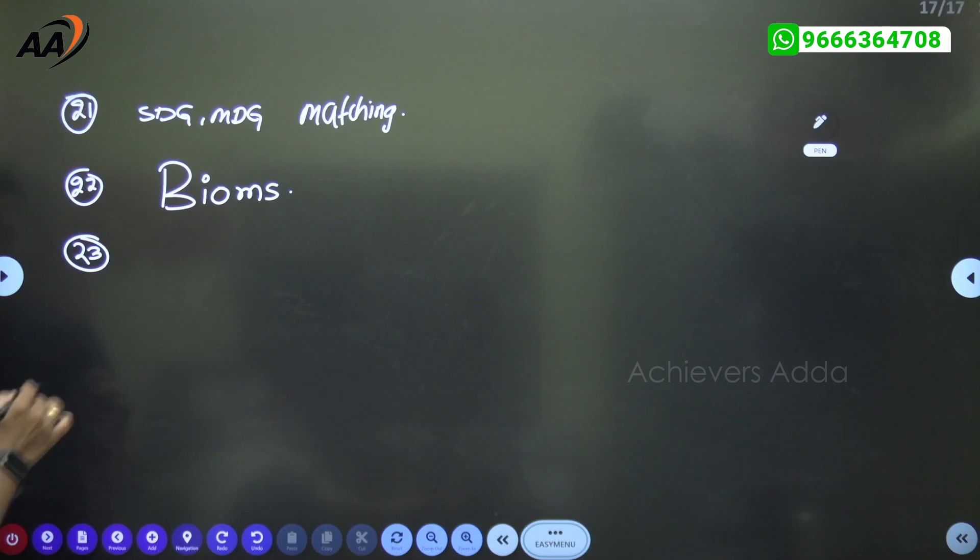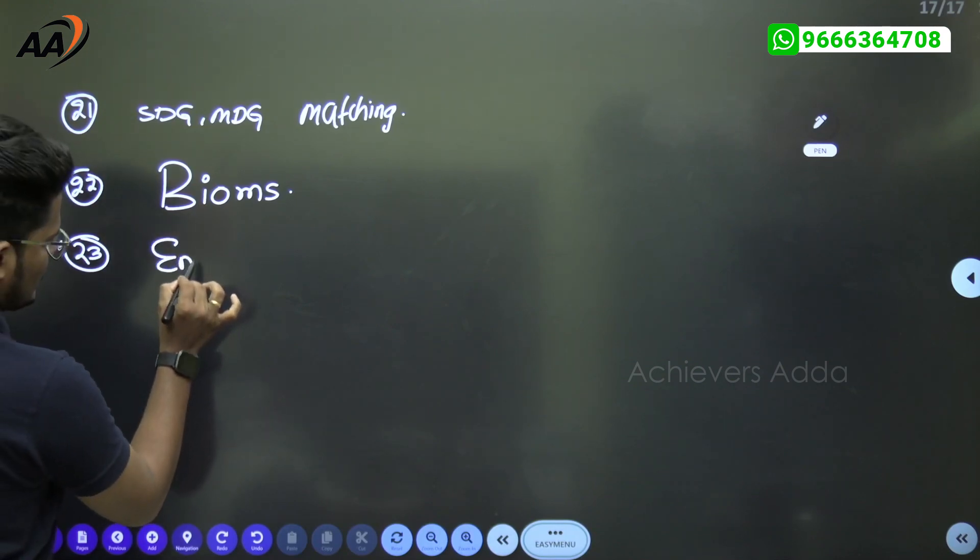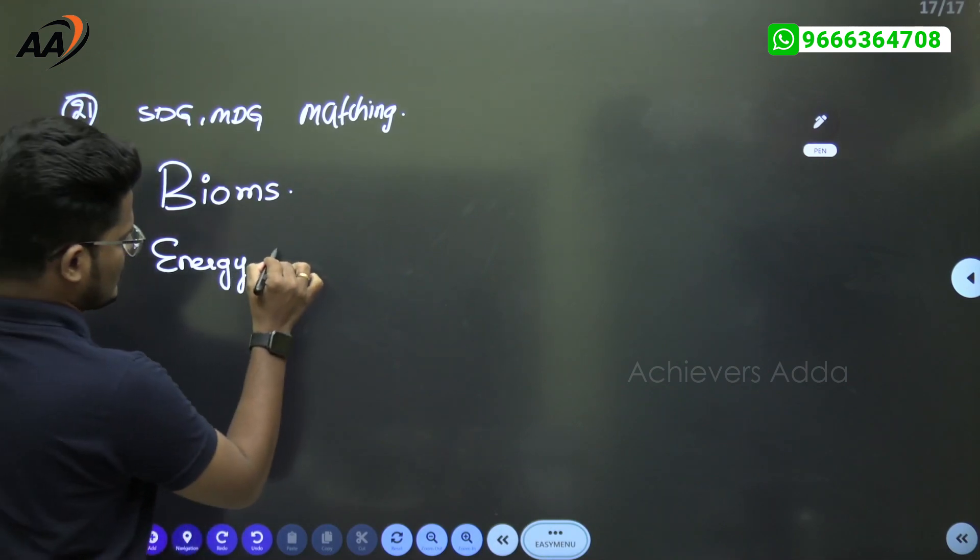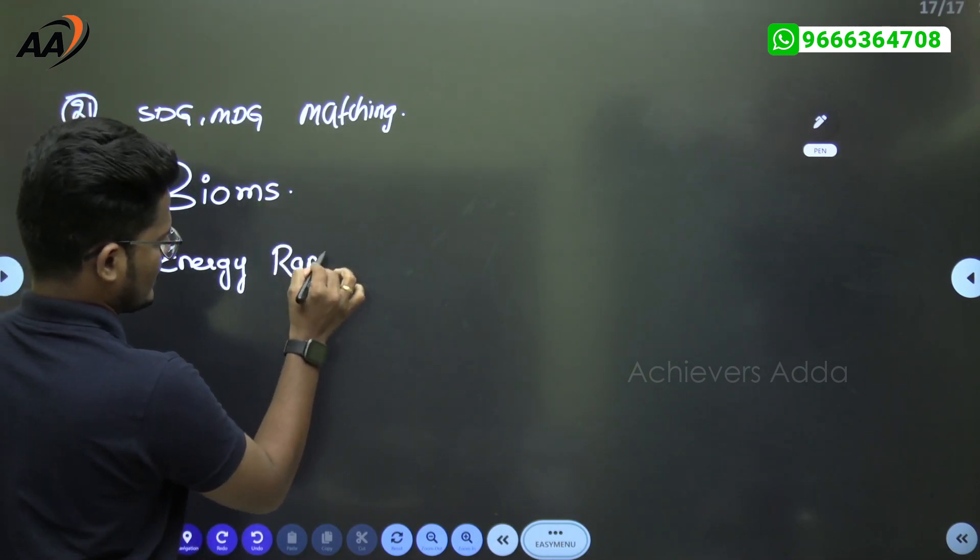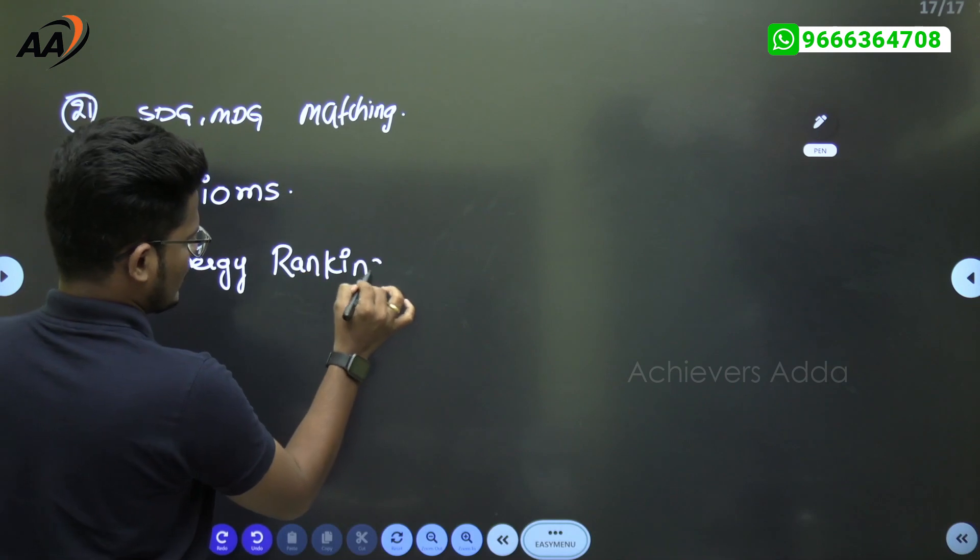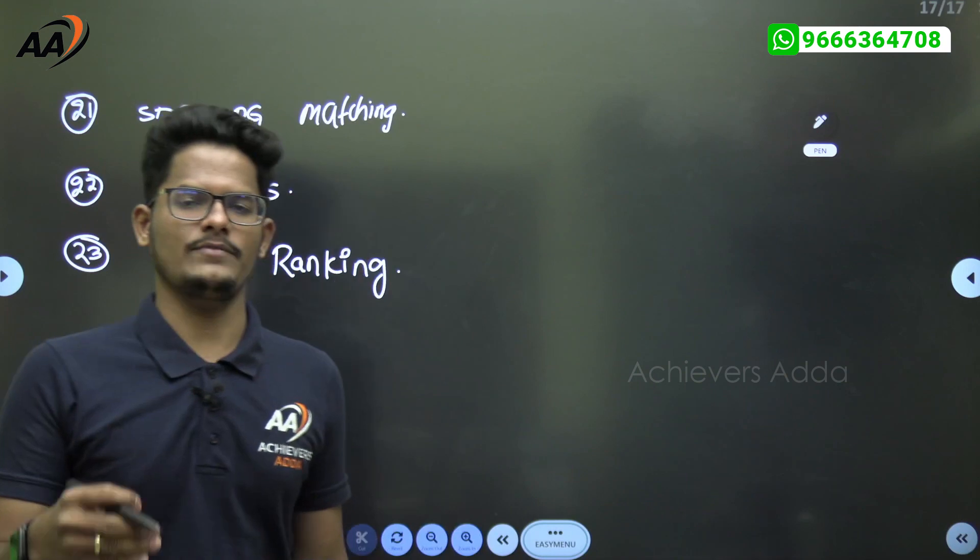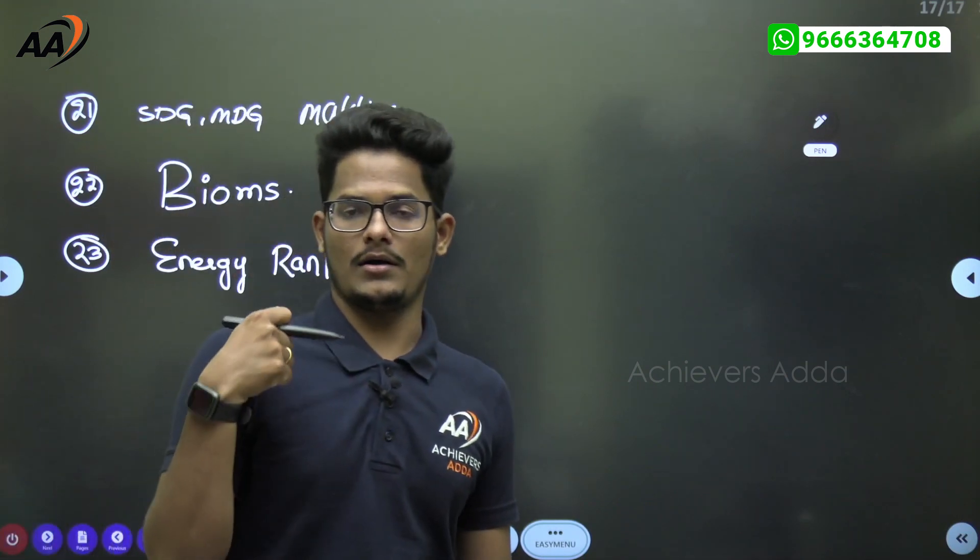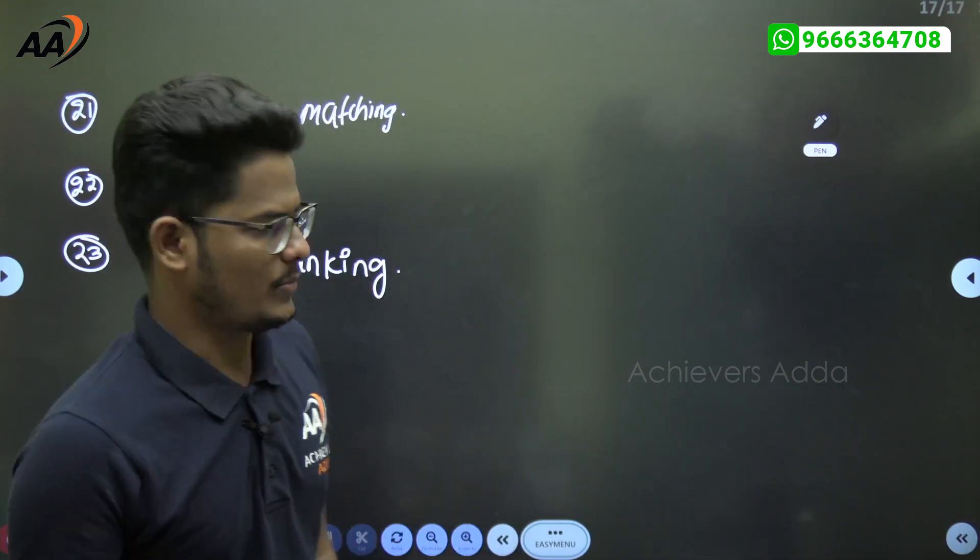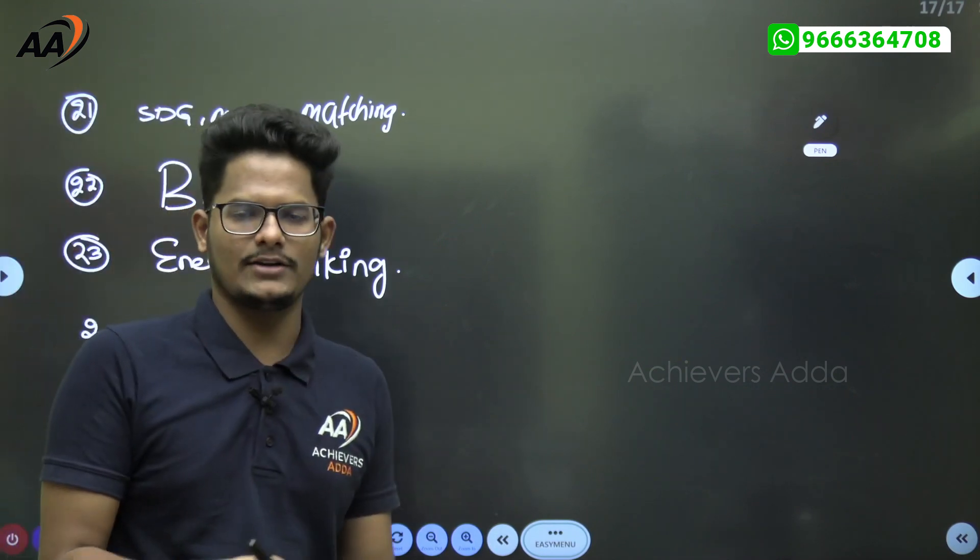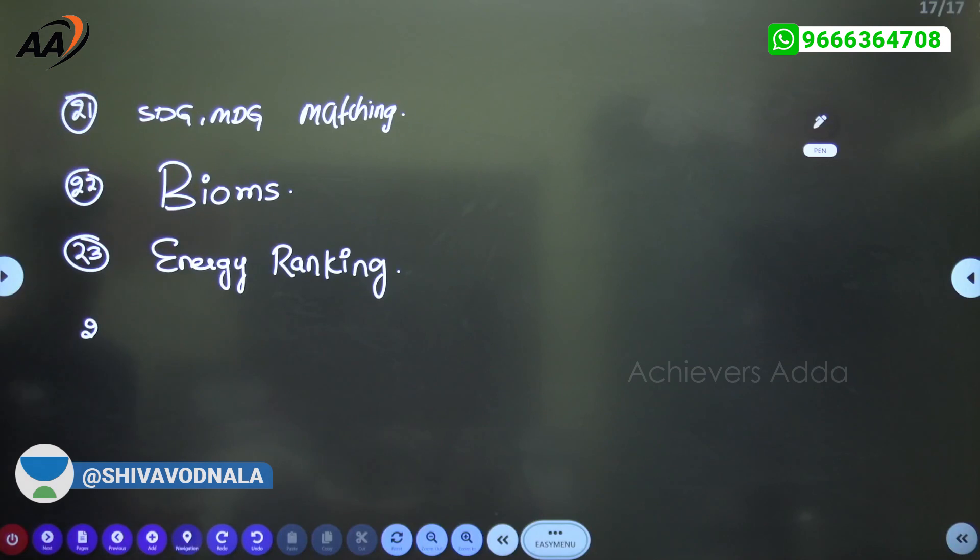Next, energy ranking has been asked related to India - which state is in top. Energy ranking: wind energy, solar energy. Wind potential, installed, production and solar energy potential, installed and production. All the things you need to learn in sequence - which is the top state and which is the lowest state to have installed capacity or potential capacity.